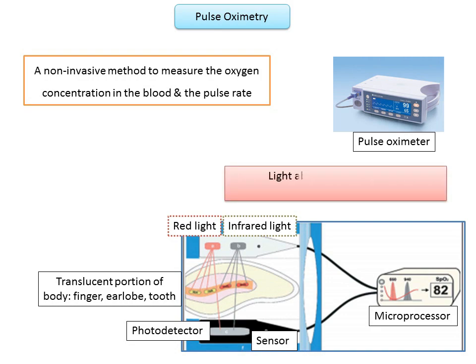Some of this light is absorbed as it passes through the tissue, and the amount of absorbed light depends on the ratio of oxygenated to deoxygenated hemoglobin in the blood. On the opposite side of the targeted tissue, a sensor detects the absorbed light. Based on the difference between the light emitted and the light received, a microprocessor calculates the pulse rate and oxygen concentration in the blood.